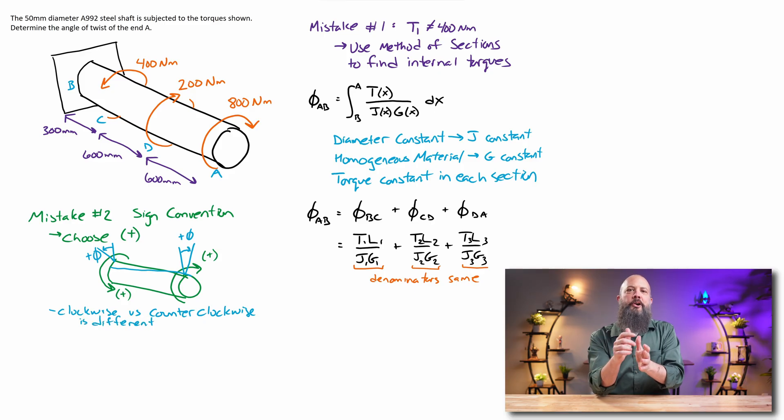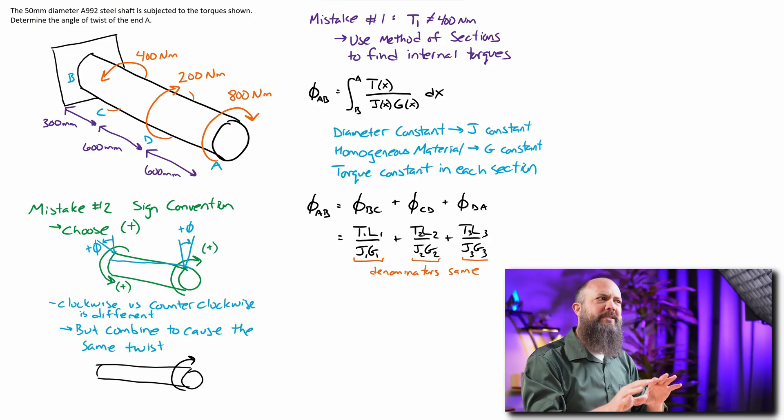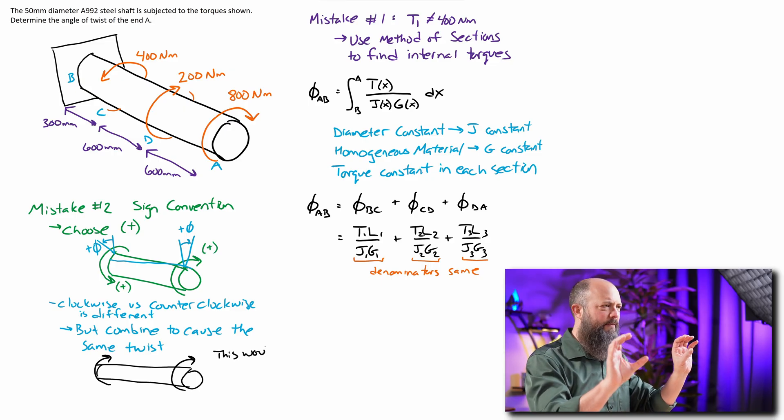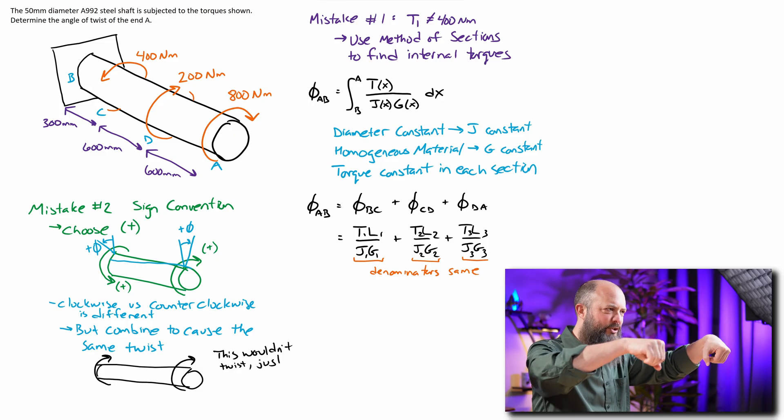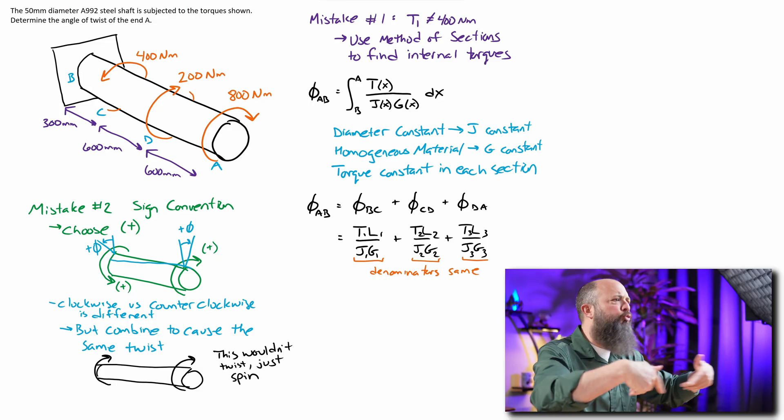If we call clockwise rotation positive, then this means our internal torque in the middle of the bar positive will be counterclockwise, right? In the opposite direction. That might seem pretty strange at first, but consider the opposite. Consider if both ends were being torqued the same direction, it wouldn't be twisting at all. It would just be rolling.